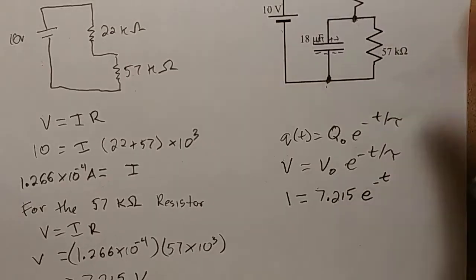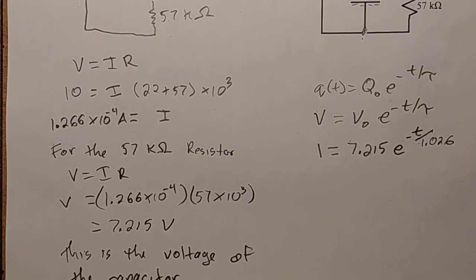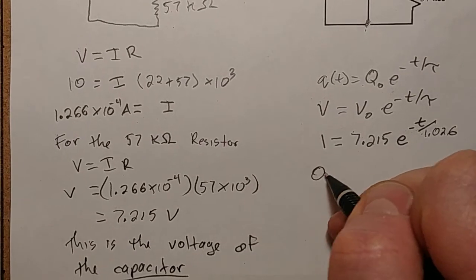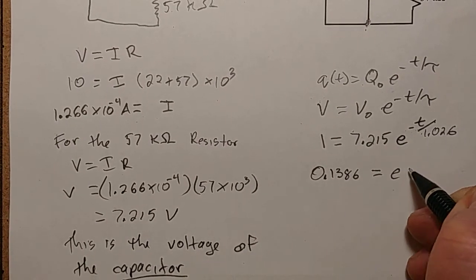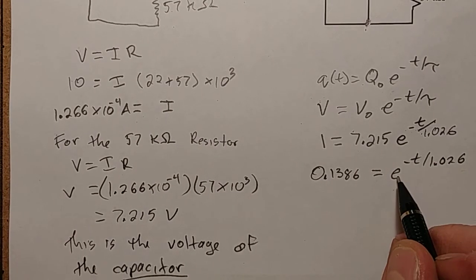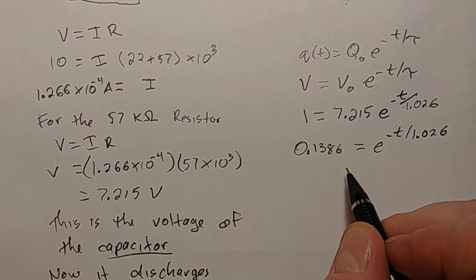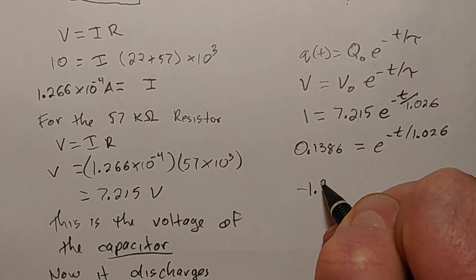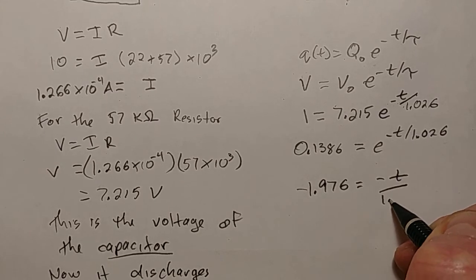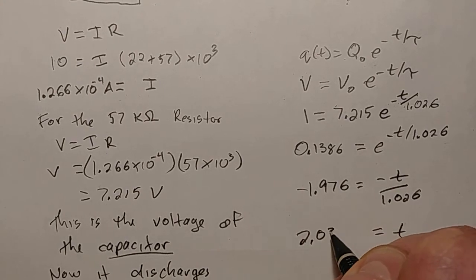So T divided by 1.026. I'll divide both sides by 7.215 and I get 0.1386 equals e to the negative T over 1.026. Get rid of the exponential function by taking the natural log of both sides. So I take the ln of 0.1386 and I get negative 1.976 equals negative T over 1.026. So T equals 2.03 seconds.